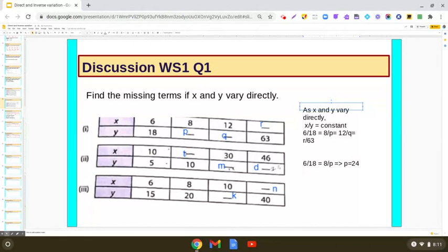Now tell me 6 upon 18 is equal to 12 upon q. So what will be the value of q? It is given that x and y are in direct proportion. So 6 upon 18 is equal to 12 upon q.